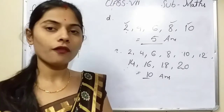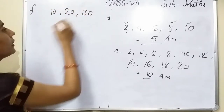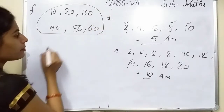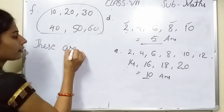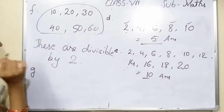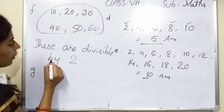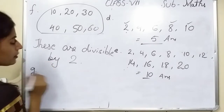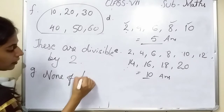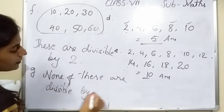What do you notice about the units digit of even numbers? The units digits are 0, 2, 4, 6, 8 — for example 10, 20, 30, 40, 50, 60. What you understand from this is that all these numbers are divisible by 2. Now, what do you notice about the units digit of odd numbers? Odd numbers have units digits that are not divisible by 2 — none of them are divisible by 2.